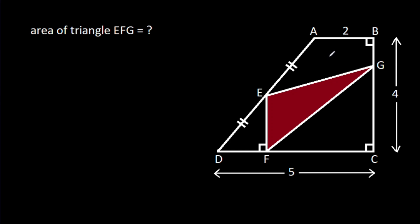In this video, we have been given that angle ABC is 90 degrees, angle BCD is 90 degrees, angle EFD is 90 degrees, AB is 2, BC is 4, CD is 5, and AE is equal to DE. We have to find the area of triangle EFG.